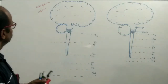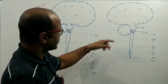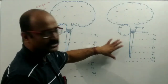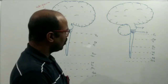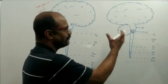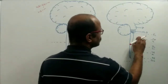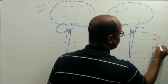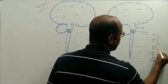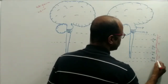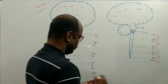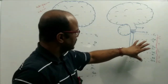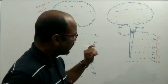The spinal cord extends from the medulla oblongata. Corresponding to the regions of the vertebral column, the spinal cord is also divided into different regions: the cervical region, then the thoracic region, then the lumbar region, then the sacral region, and the last region is the coccygeal region.